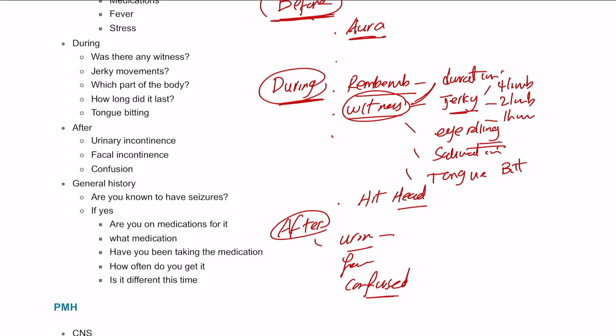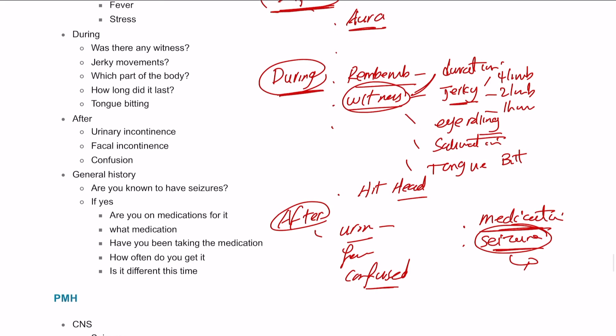And then some general questions for the promoters or the initiators of the seizure. We can ask if there are any medications. And have they been taking them? Have they had any seizure before? And if they had any seizure before, how often do you get it? How is it treated? And do you take your medication regularly or not? And what do you think was the initiator?